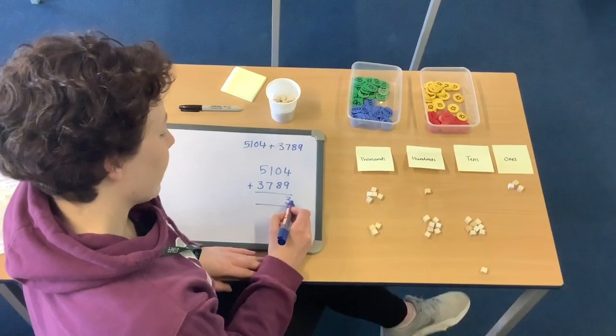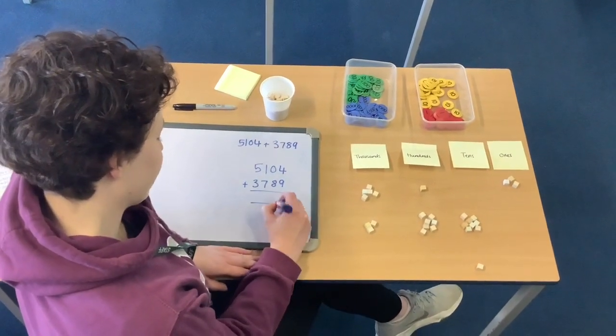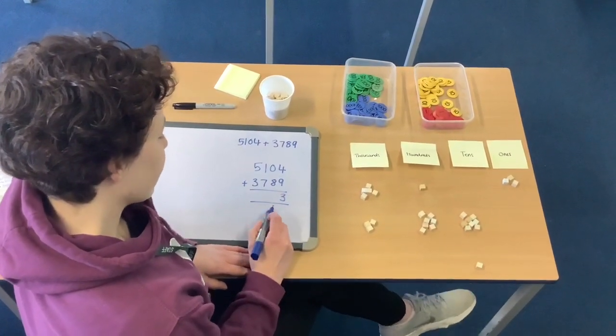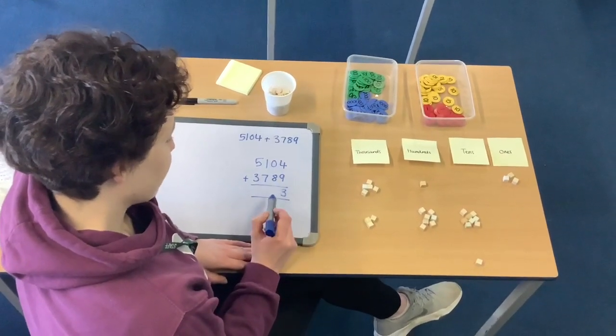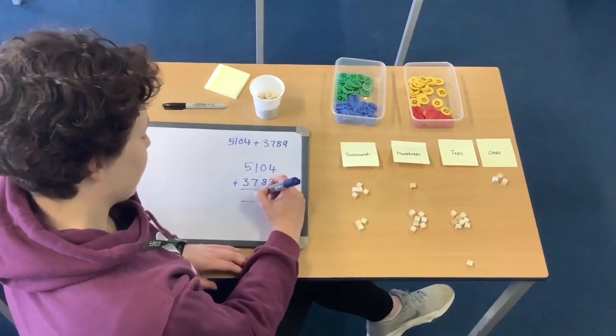Three will go in my ones column. And my one ten that I've regrouped goes underneath. Then I've got zero tens add eight tens, add the one that I've regrouped is nine tens.